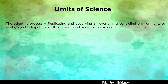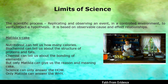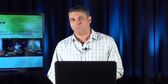The scientific process involves replicating or observing an event in a controlled environment to verify or reject a hypothesis. It is based on observable cause-and-effect relationships. Think of Matilda baking a cake: a nutritionist can tell us calories, a biochemist the structure of proteins and fats, a chemist about elemental bonding — but only Matilda can give us the reason and meaning for her cake. Science can only answer 'how' questions; it cannot answer 'why.'